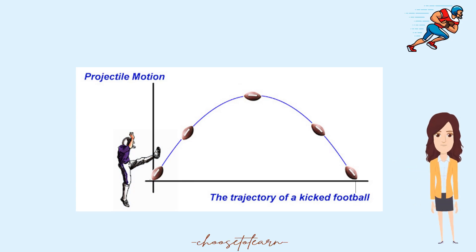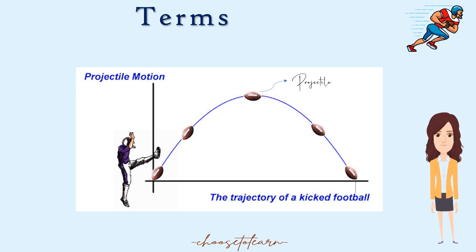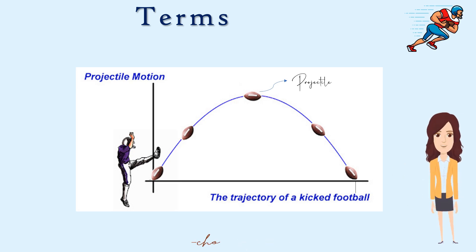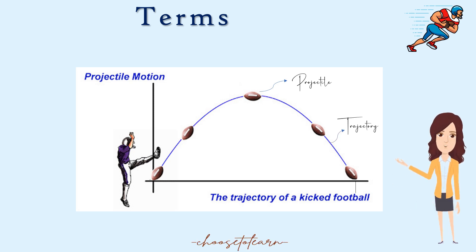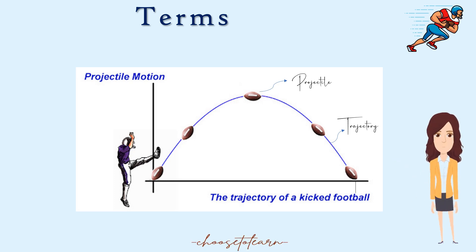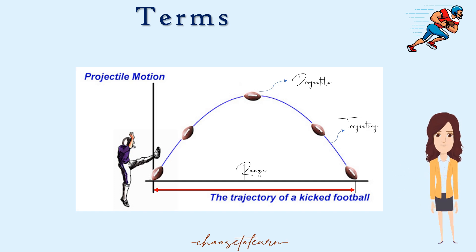Let's introduce the different terms used in projectile motion. First, a projectile is the body or object being thrown upon which the only force acting is gravity. Examples are a soccer ball being kicked, a basketball that was thrown, and a bullet fired from a rifle. The second term is trajectory — the curved path that a projectile follows. The trajectory of a projectile is a parabola. Lastly, range is the horizontal distance traveled by the projectile between the launching point and the landing point.